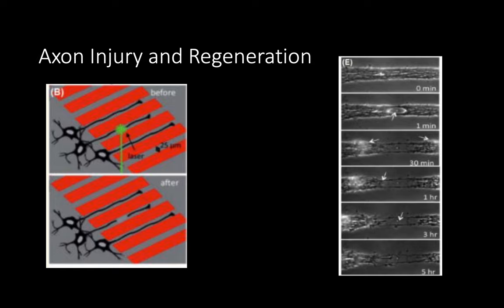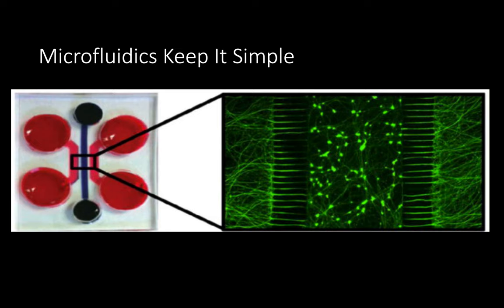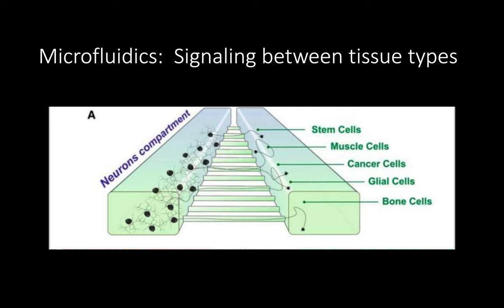However, microfluidics is not limited to simply isolating strands of axons and making observations — it's also used for complex neural circuitry and signaling. A big part of neurobiology is not just studying brain tissue, but nervous systems and their connectivity to other organ systems within the body. This schematic shows one creative way researchers used microfluidics to investigate neural signaling from neurons to other cell types, ranging from stem cells and muscle cells.